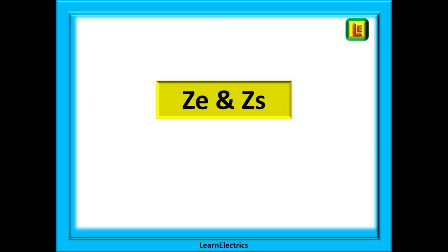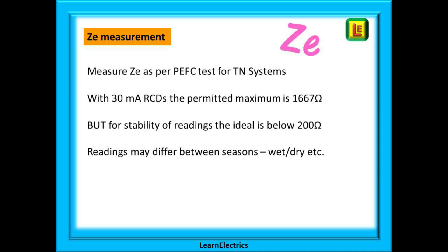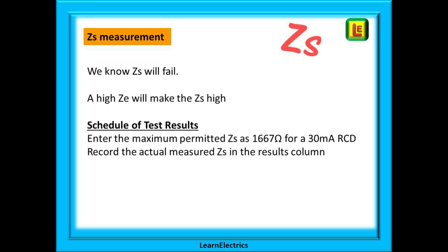Now let us look briefly at ZE and ZS. Measure ZE as you would for a prospective earth fault current test for TN systems — this will also give you the ZE value. Because ZE is going to be high, ZS and ZE will be almost the same value. With 30 milliamp RCDs, the permitted maximum for ZS is 1667 ohms, but for stability of readings the ideal ZS should be below 200 ohms. Readings may differ between seasons, between wet and dry seasons. We know that ZS will fail even before we test it — because a high ZE will make ZS high.